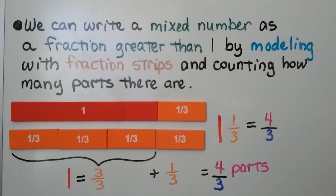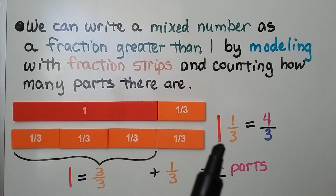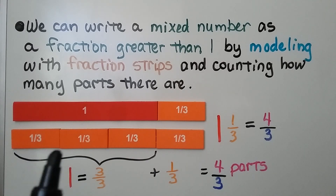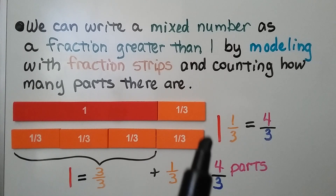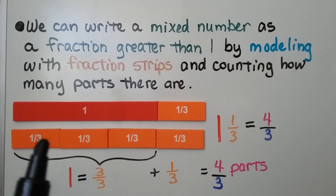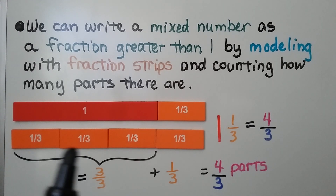We can write a mixed number as a fraction greater than one by modeling with fraction strips or fraction bars and counting how many parts there are. We want to change one and one third into a fraction greater than one. We have one whole and one third. Three one-third parts is equal to one whole, and we have another one third — that's one and one third. We used four one-third parts, so we have four thirds.